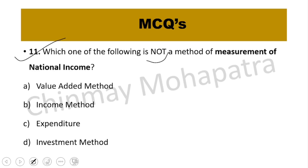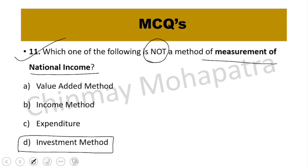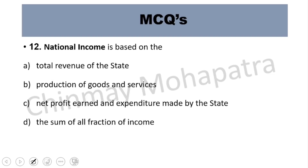Question number eleven: which one of the following is not a method of measurement of national income? The right answer is the investment method — it is not a method. The valid methods include the value added method, income method, and expenditure method.